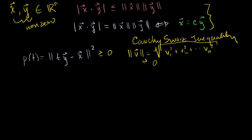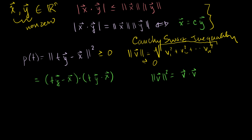In a previous video, I showed that the magnitude of a vector squared can be rewritten as the dot product of that vector with itself. So p(t) equals the dot product (ty − x) · (ty − x), which is greater than or equal to 0. In the last video, I showed you that you can treat the dot product very similarly to regular multiplication when it comes to the associative, distributive, and commutative properties.